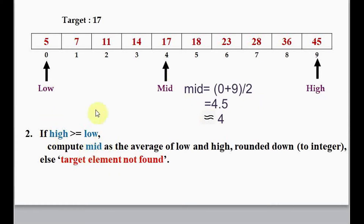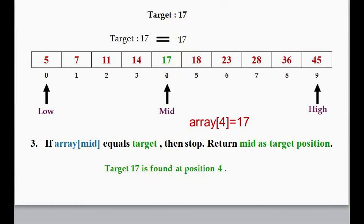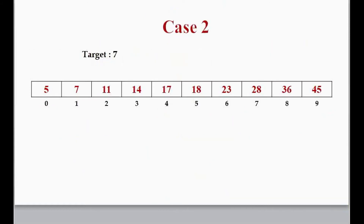Before computing mid, we check that high is greater than or equal to low; only then can we compute mid. If high is less than low, we print 'target element not found.' Next, we check array[mid] equals target — yes, our target is 17 and array[mid] is 17, so we have found the target element. We return position 4: 17 is found at position 4. That's it for case 1.